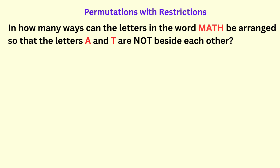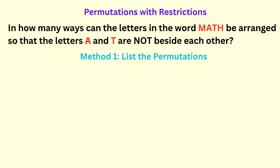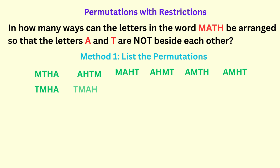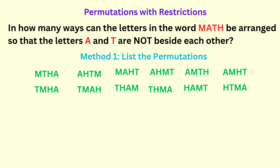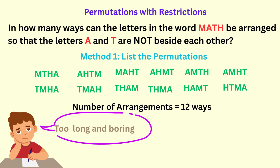We will discuss three ways of doing this. One method is to list out all the different arrangements where the letters A and T are not together. We would get 12 permutations. However, doing it like this is too lengthy and tiresome.